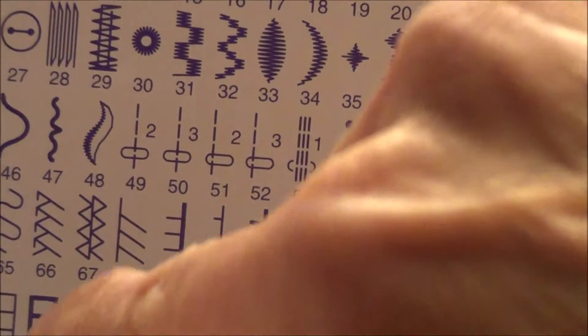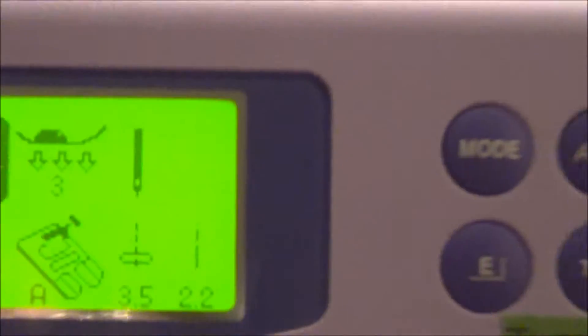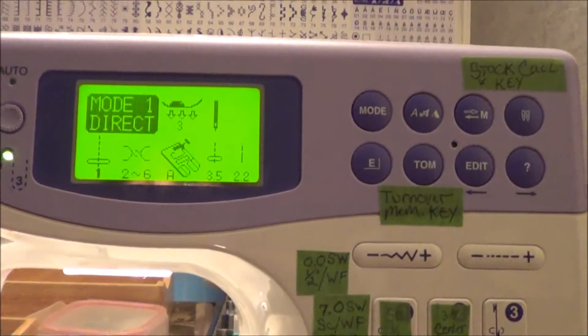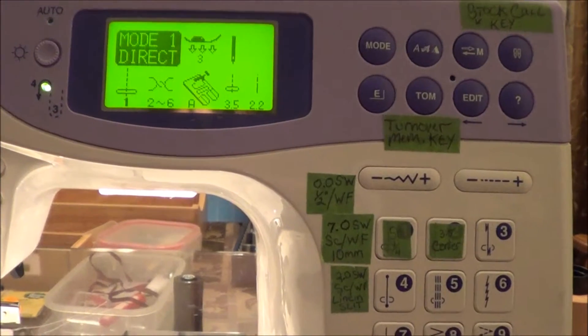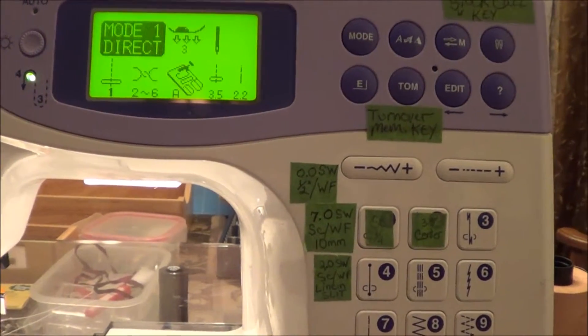So we have to mirror image this stitch and it's not user friendly on these Janome's. So the way you do it if anybody has one I'll just go through it real quick. I don't know if the new ones are more user friendly. This machine is about 10 years old.